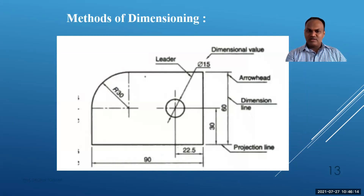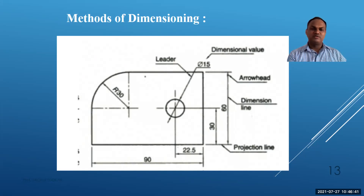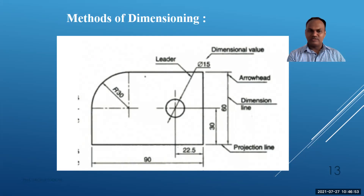The dimension value is written along the dimension line — for example, a circle of diameter 15 is written as Ø15. The leader line points to the feature with an arrowhead. For radius, the dimension line goes from the center to the arc and is labeled R — for example, R30. In summary: use R for radius and Ø (phi symbol) for diameter.